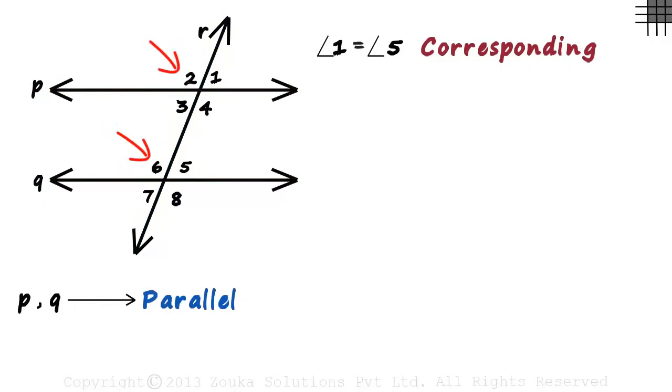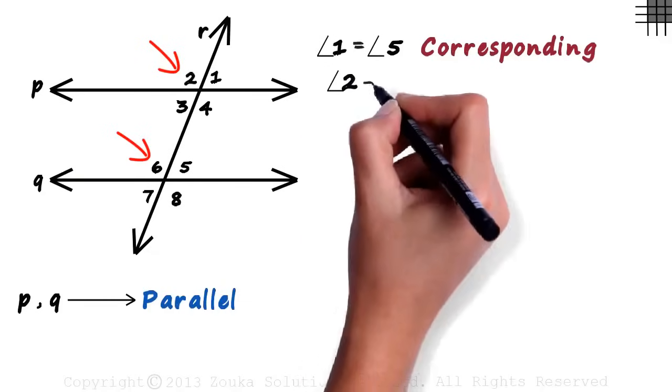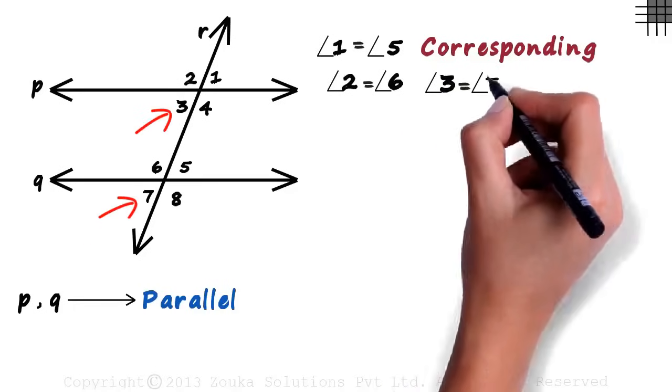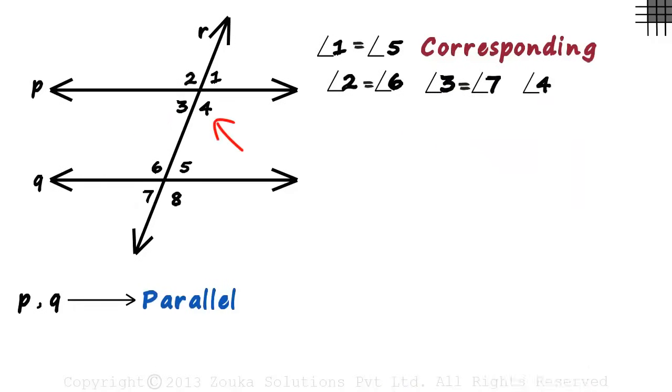Two and six form a corresponding angles pair, so angle two will always equal angle six. You can even look at the figure and observe that they are equal. Similarly, angle three will equal angle seven, and angle four will equal angle eight. These are the four pairs of corresponding angles that are formed: one and five, two and six, three and seven, four and eight.